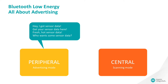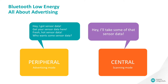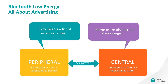Eventually, a central is going to come along that wants to get the data from the peripheral. At that point, the peripheral sends a message to the central describing its set of services. The central selects a service and connects to it, at which point the peripheral and the central are said to be connected.